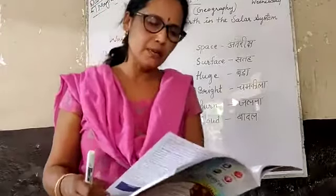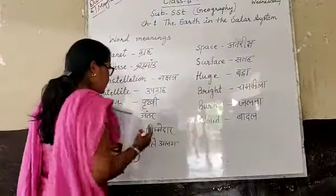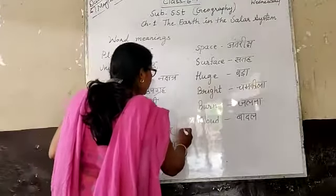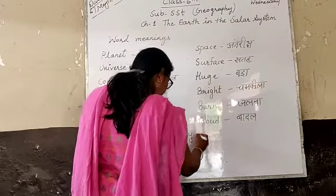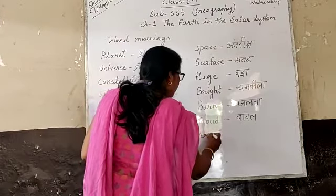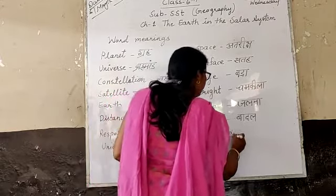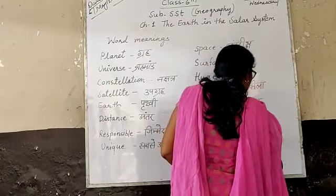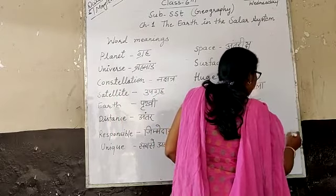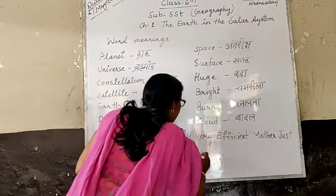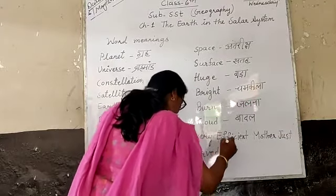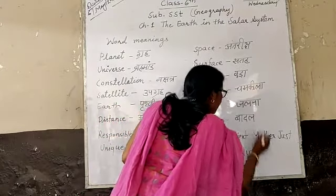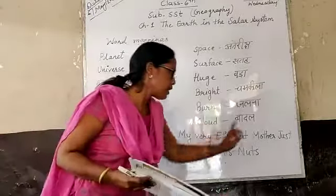In the first section I have told you this chapter. I have already given you a sentence to remember the planets: My, Very, Efficient, Mother, Just, Served, Us, Nuts — this is the name of all the planets.